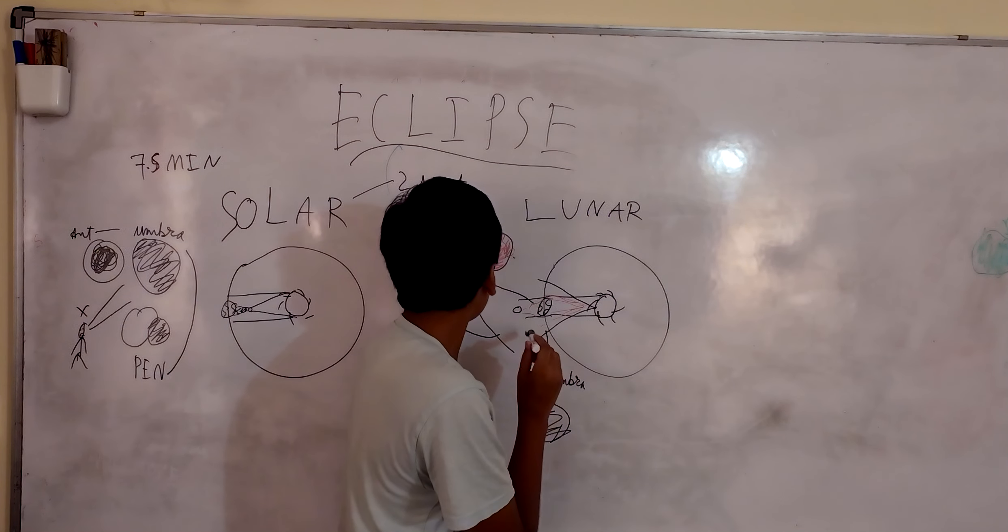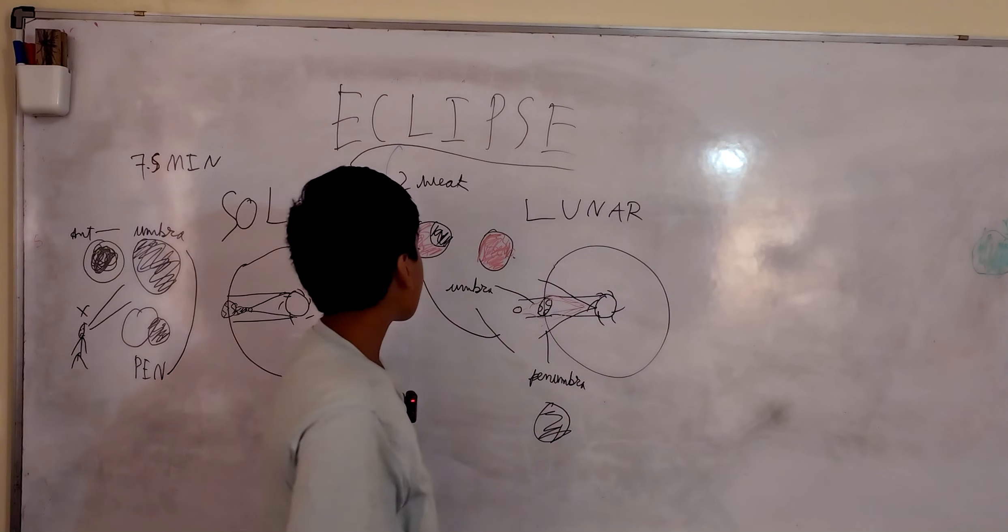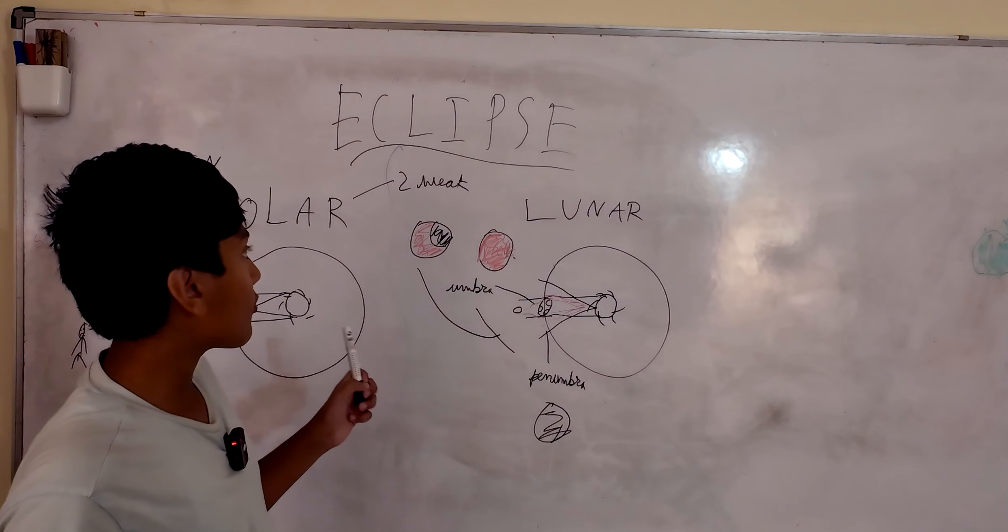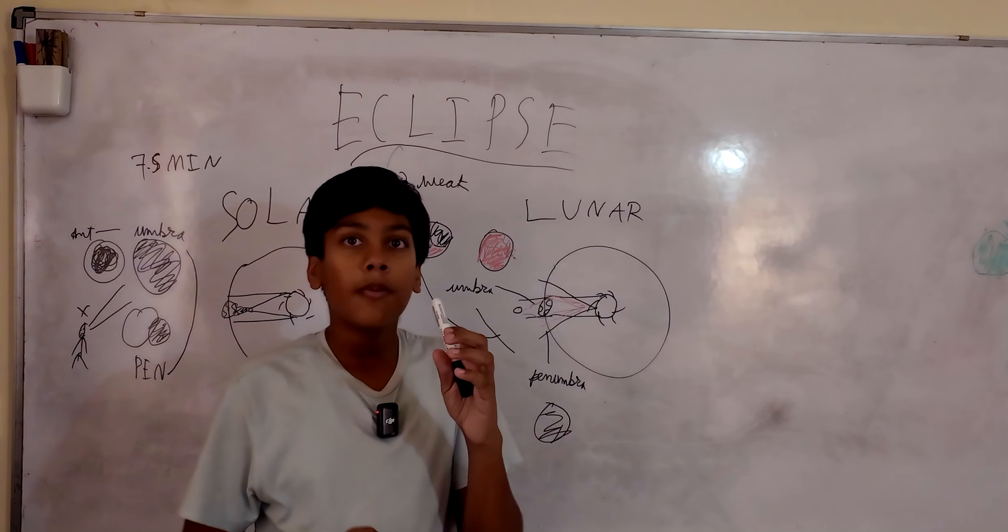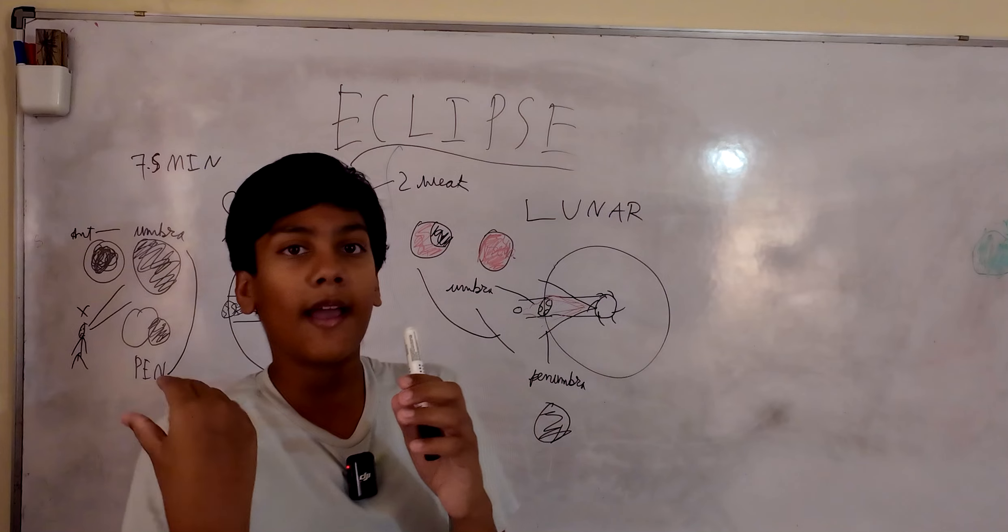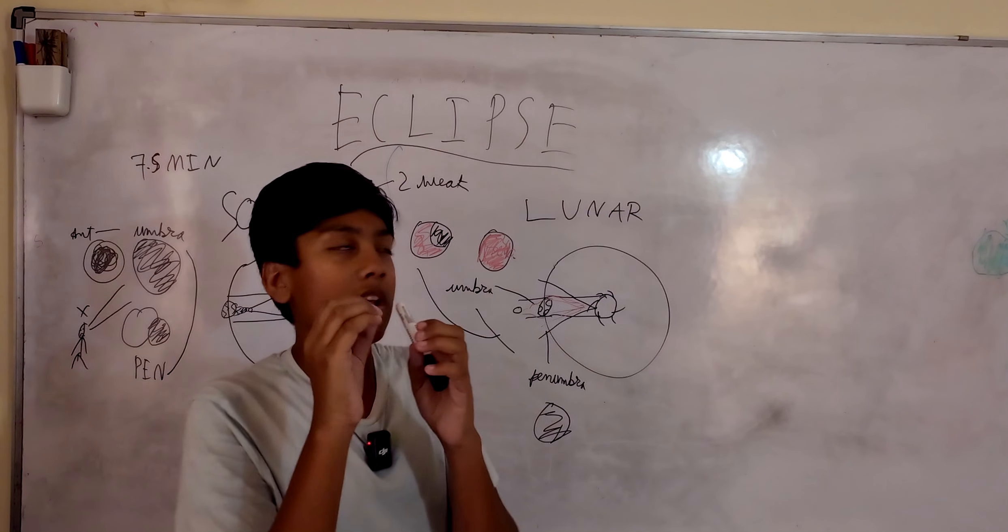Then when it reaches here, between the umbra and the pre-umbra, we have a mixture between both where you can see some of the moon but there's still some of the moon that you cannot see.